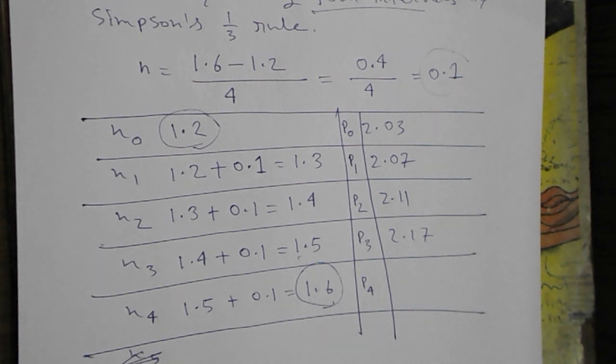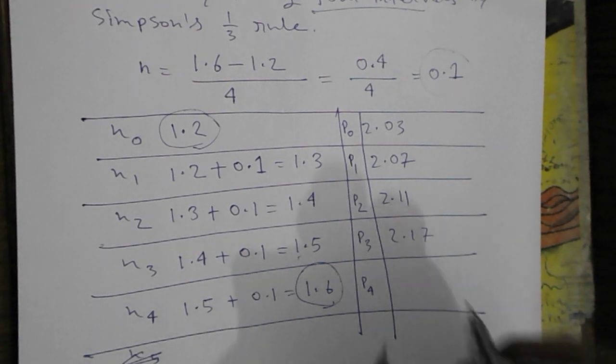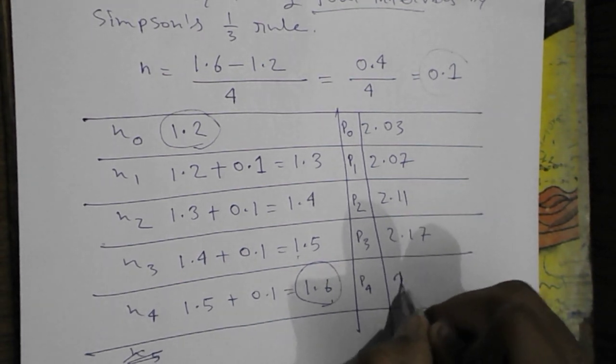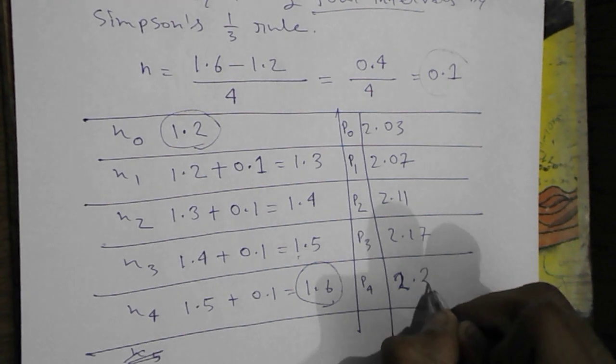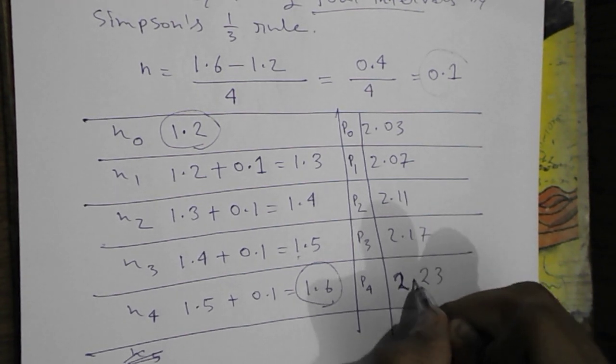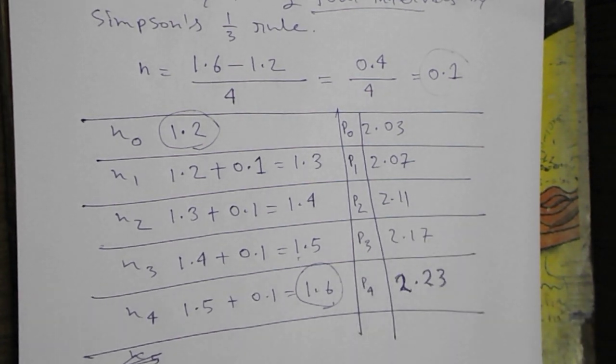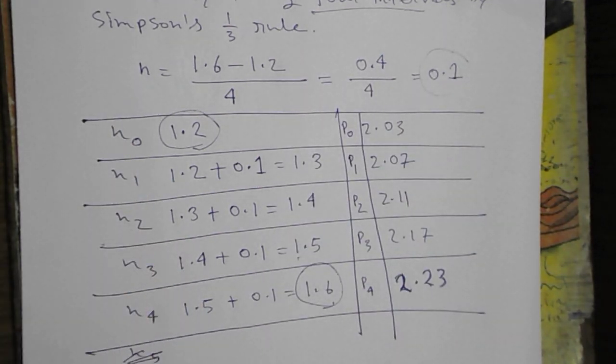After that 1.6. 1 by 1.6 is 0.625 plus 1.6, that is 2.23 approx. So we have the value of all the p and all the x.